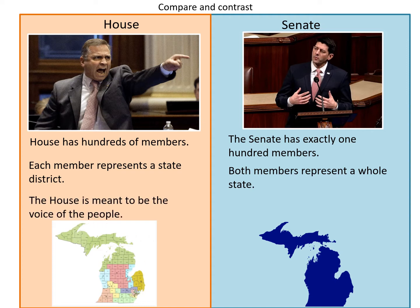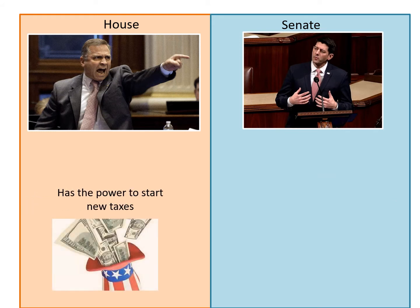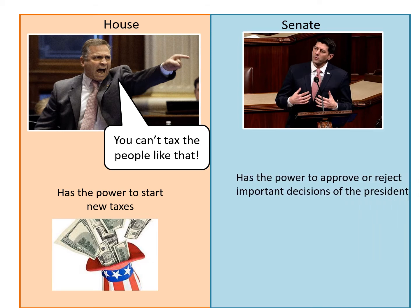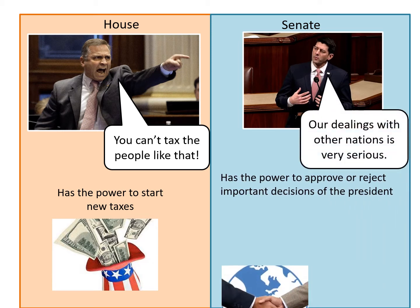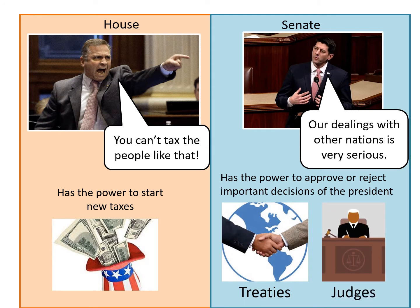The House is meant to be the voice of the people; the Senate is meant to be the voice of the state. The House has the power to start new taxes — since it's the voice of the people, it's going to prevent the people from being overtaxed. The Senate has the power to approve or reject important decisions of the president, like treaties and judges.